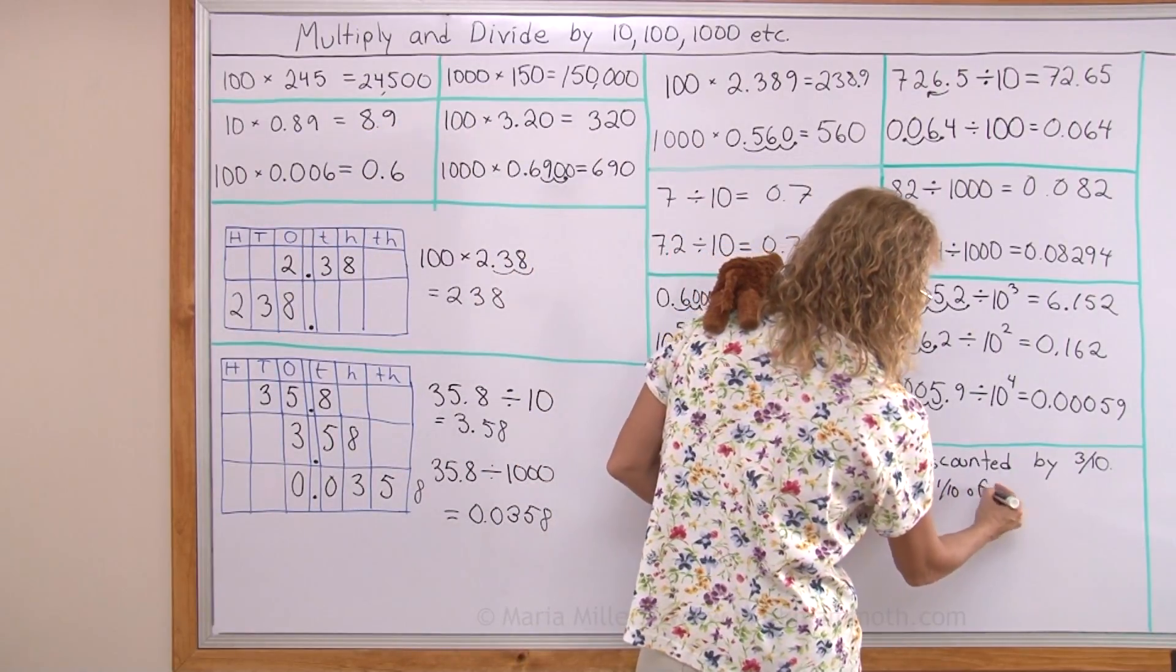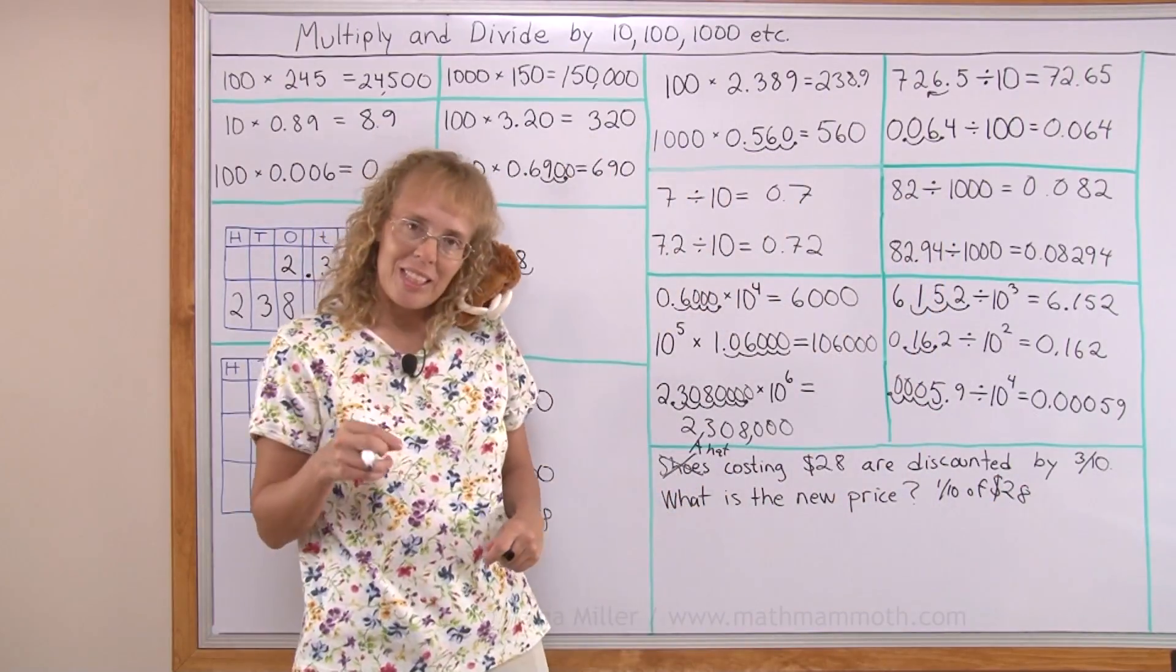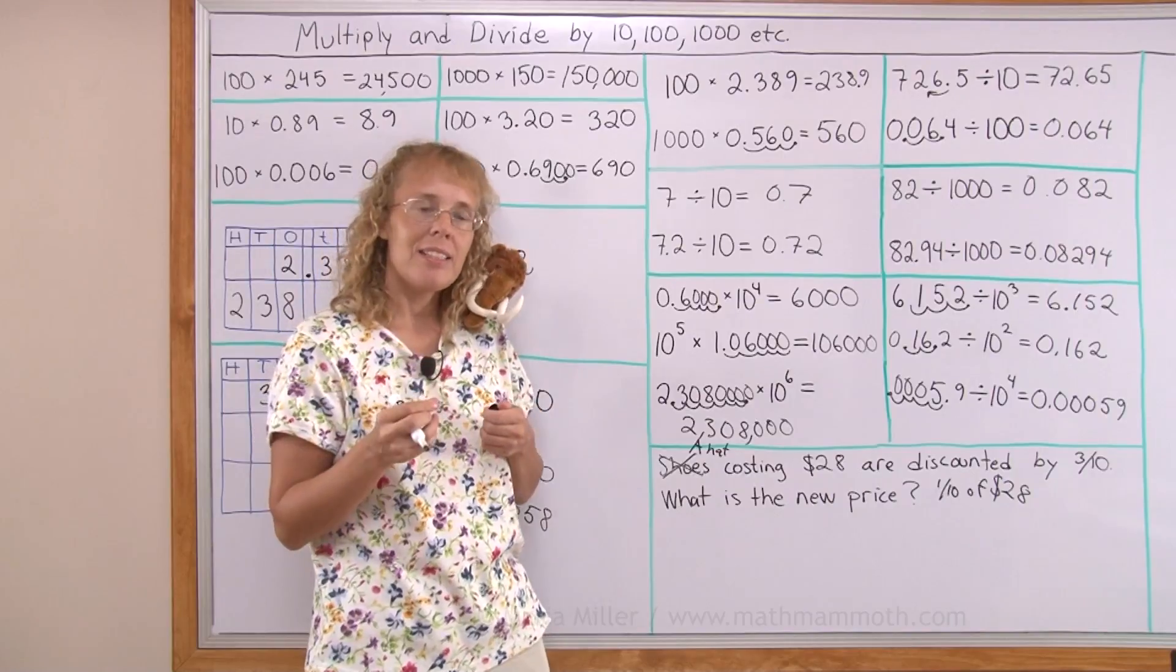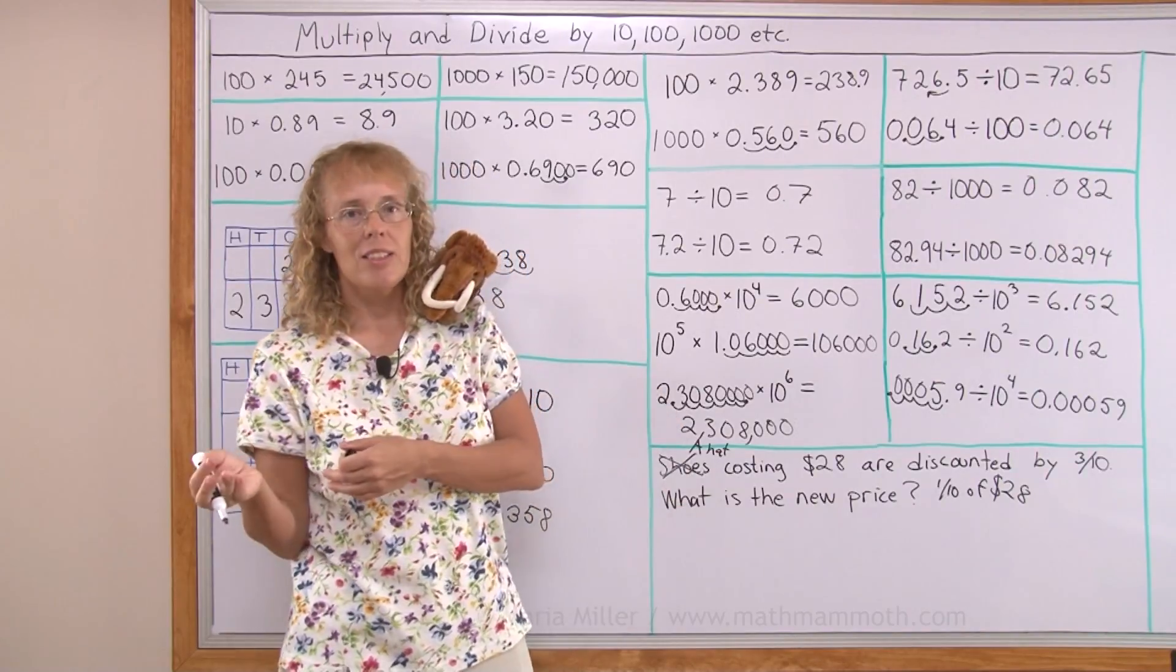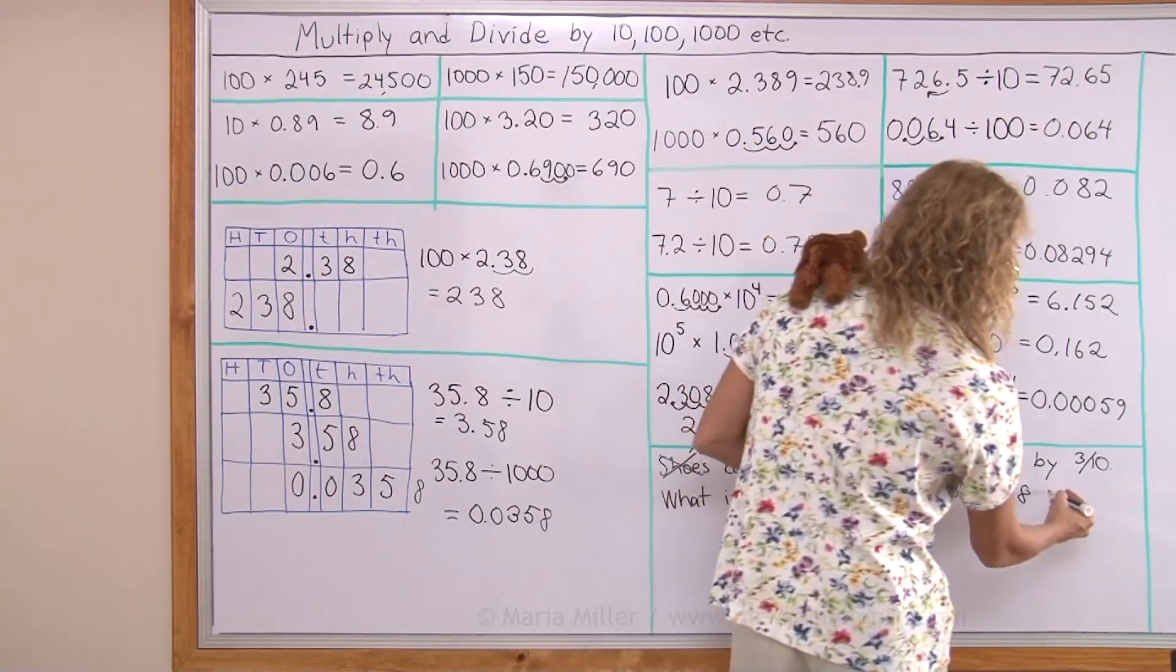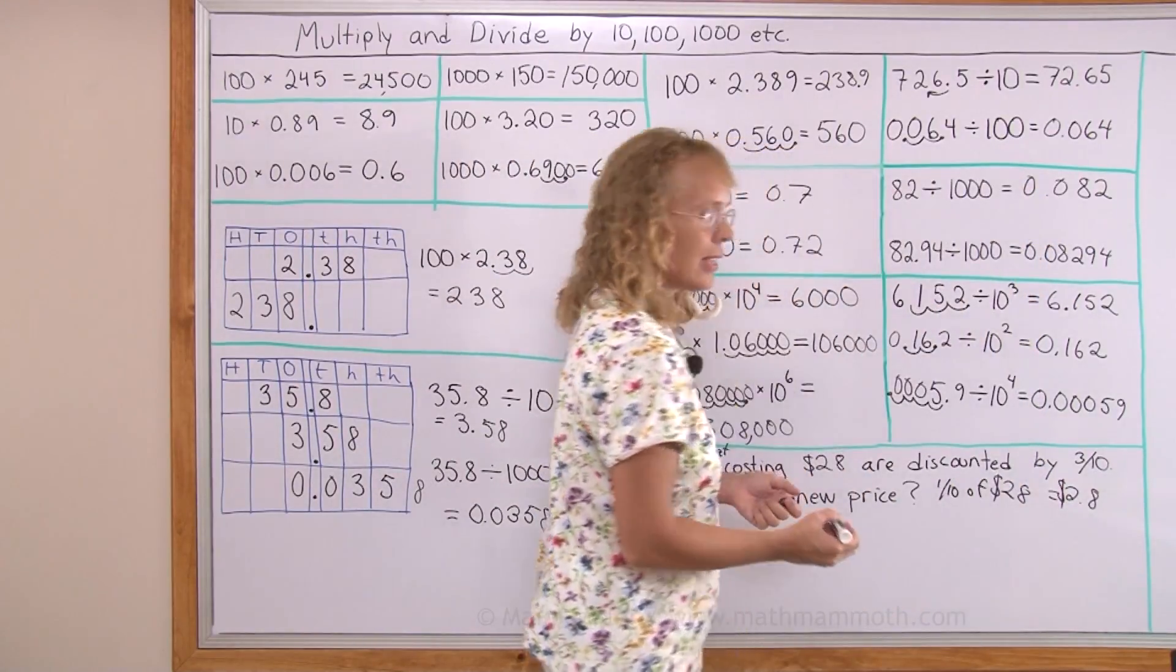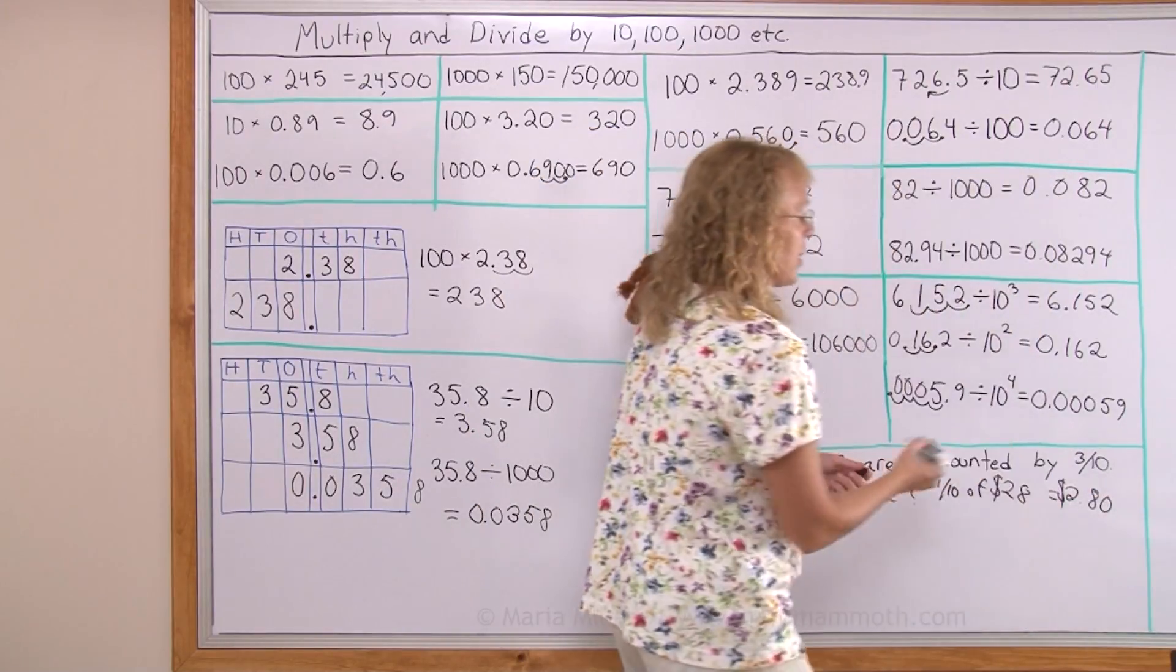One tenth of 28 is 28 divided by 10. And remember, dividing by 10, it's a whole number divided by 10. So our answer has to have tenths or one decimal digit. It is 2.8. But since it's a dollar amount, I want to put a zero here. Two dollars eighty cents.